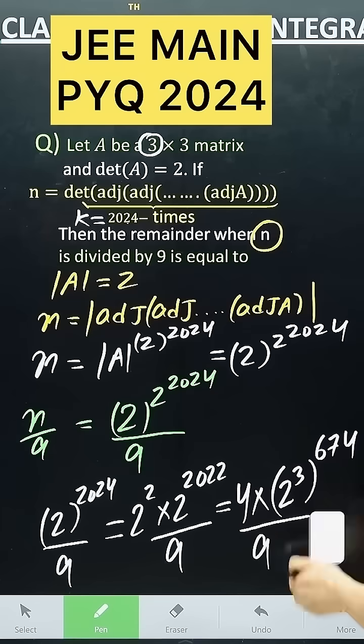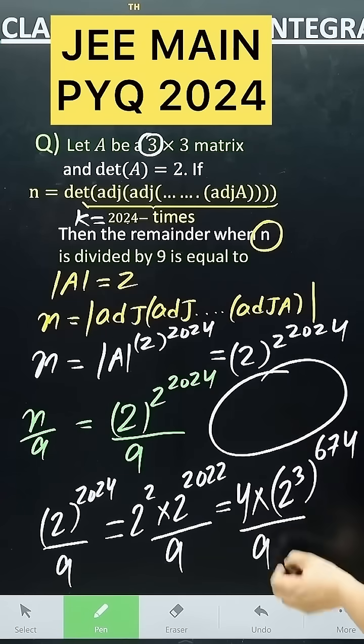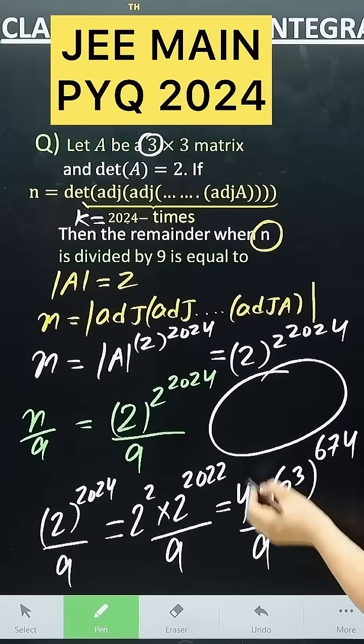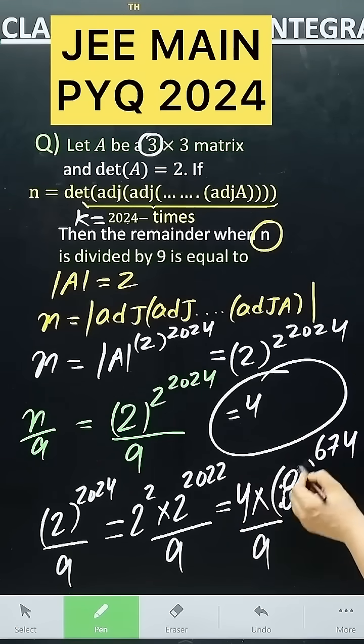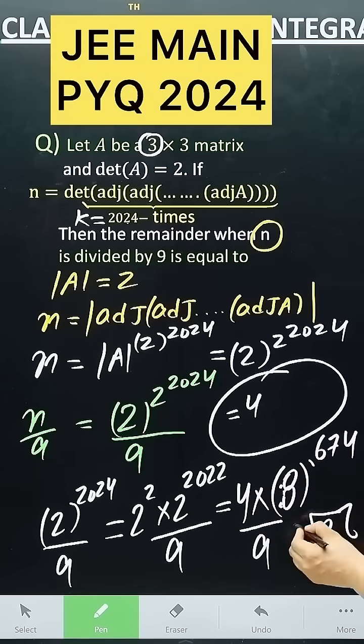Now this will not be divisible by 4 by 9, but if you divide the cube of 2, which is 8, you can write it as 8. Divide 8 by 9, 9 times 1 equals 9, then the remainder will be minus 1.